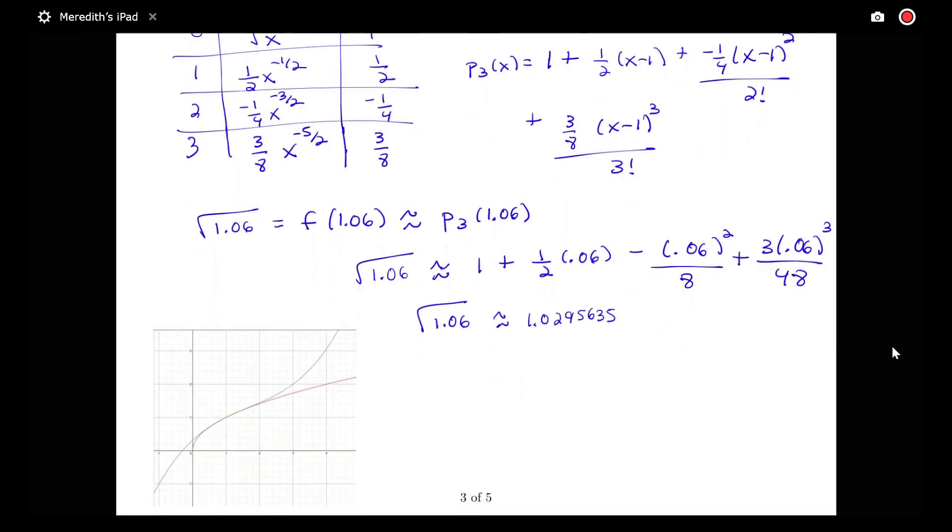Here's a graph that shows our Taylor polynomial and the square root function. The red graph is that square root function and then this green graph is my P3 of x. Centered at 1, I have that green curve being very close to the red curve. So 1.06 being approximated by that green curve is quite a good approximation of the actual value. If you were to find the square root of 1.06 on a calculator, that would come out to 1.029563014, so we can see this approximation is very close to the true value.